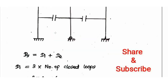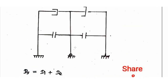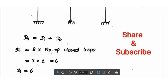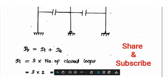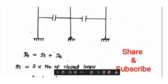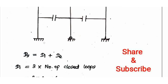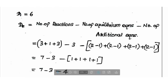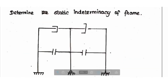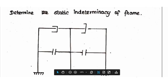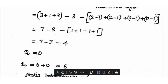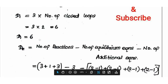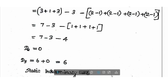For the frame example, we identify closed loops. There are 2 closed loops. Internal static indeterminacy = 3 × number of closed loops = 3 × 2 = 6. External static indeterminacy = number of reactions minus equilibrium equations minus additional equations. Reactions: fixed support contributions give 3 + 1 + 3 = 7. Equilibrium equations = 3. Additional equations from internal hinges = (2−1) + (2−1) = 1 + 1 = 2. Wait — recalculating: 7 − 3 − 4 = 0. External static indeterminacy = 0. Total static indeterminacy = 6 + 0 = 6.